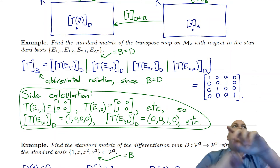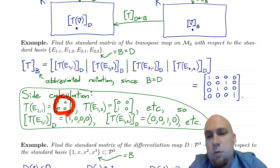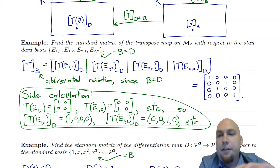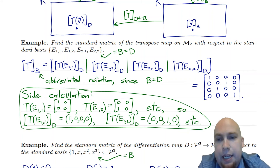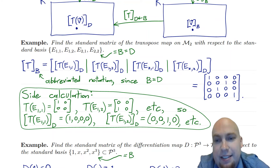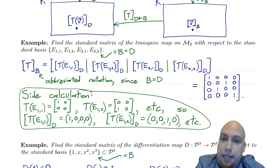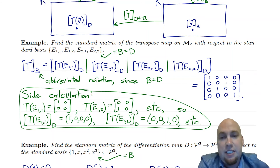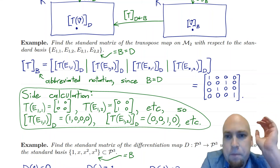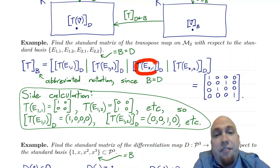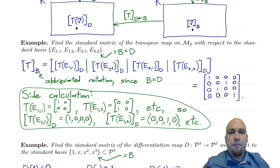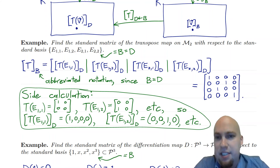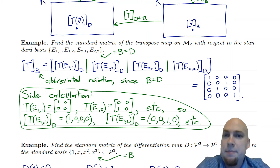So we have to compute each of the four columns. T of E11: T is the transpose map, so you take E11 — which has a one in the (1,1) entry and zeros everywhere else — and transpose it. Transposing that matrix doesn't do anything, so T of E11 is just E11 again. E12 is more interesting: it has a one in the first row, second column. After you transpose it, it turns into E21. Similarly, T of E21 is E12 — the transpose just swaps where the one is. And T of E22 is just E22.